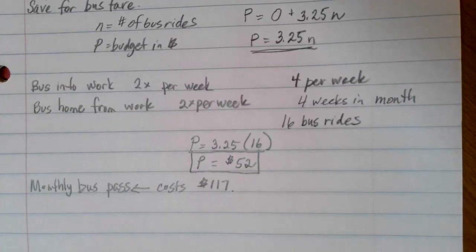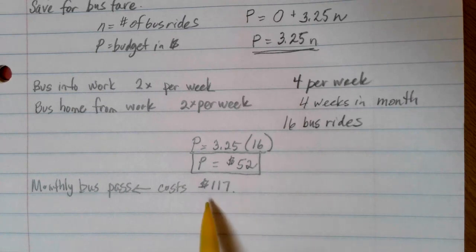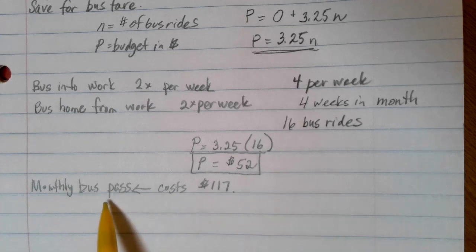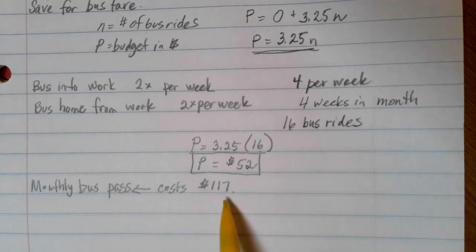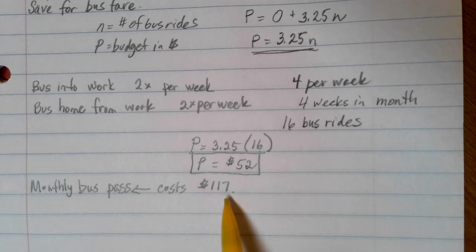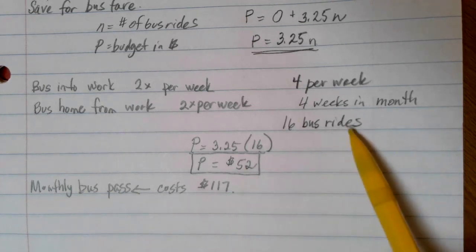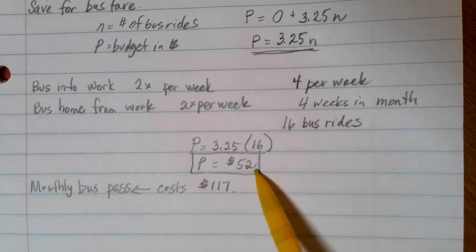A monthly bus pass for this drive that you have to do into work costs $117. With a monthly bus pass of $117, I don't have to pay any more once I get to $117. But the problem is with a bus pass, if you only use the ride once, you still have to pay that $117 no matter what. So at some point, it's going to be cheaper to pay by the bus ride. Like in this example, at $52, I would definitely just pay for each bus ride.